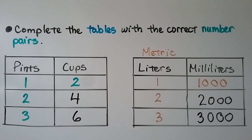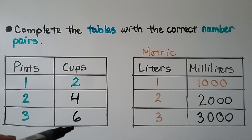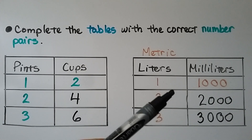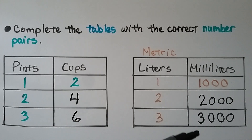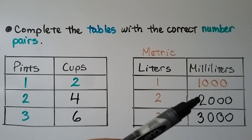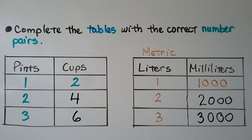For pints and cups, the cups column is multiples of 2: 2, 4, 6. For liters and milliliters, the milliliters column is multiples of 1,000: 1,000, 2,000, 3,000.